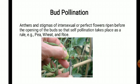The third method is bud pollination. Bud pollination means that pollination occurs while the flower is still in bud condition — the anther and stigma of perfect flowers ripen before the opening of the buds, so the only possibility is self-pollination. Common examples include pea, beet, and rice.